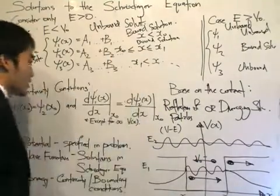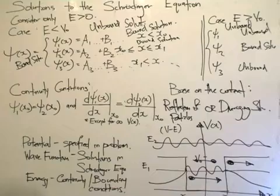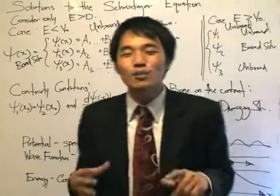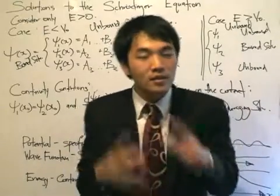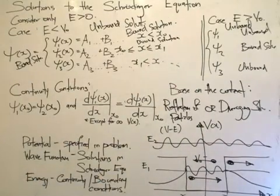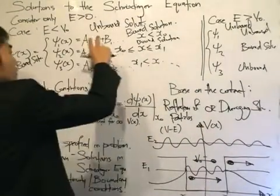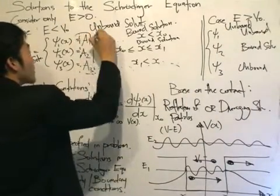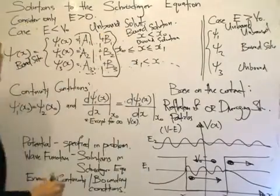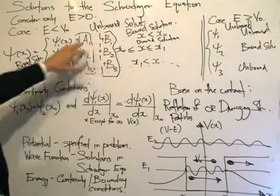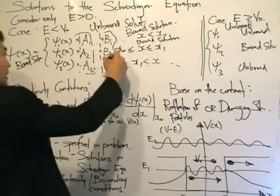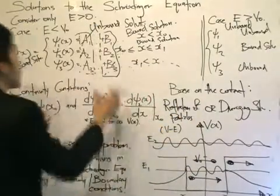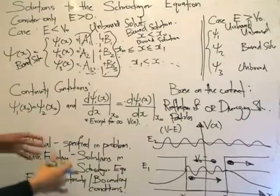We also talked about eliminating the coefficients. Today we're going to proceed with something called continuity equations and boundary conditions. When we write down the solutions, there has to be a method for us to find all these coefficients — there are six unknowns. If we manage to eliminate, say, these two, based on the reflection and the diverging solutions, we know they are unphysical and can eliminate them. We still have four coefficients to manipulate.